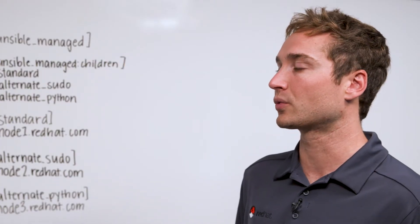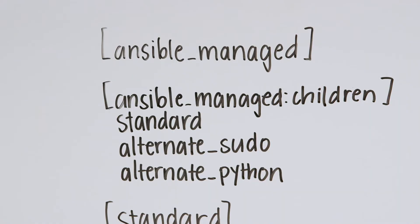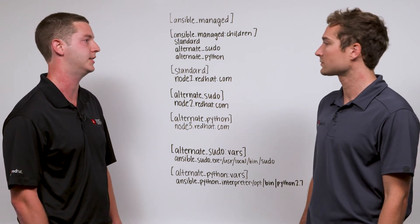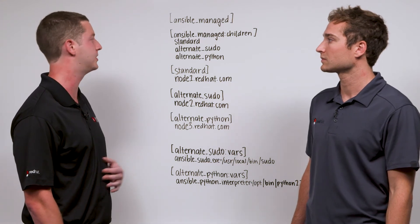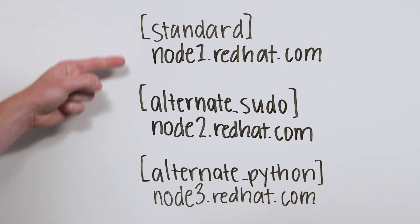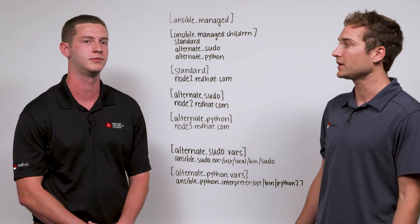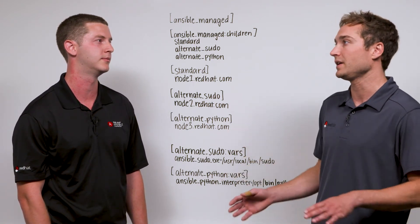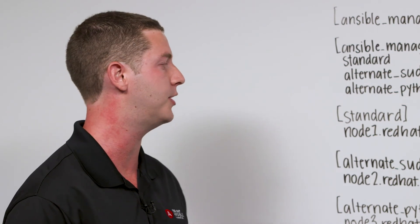Can you tell me how the groups in this inventory file work? Sure. Let's take a look at this inventory file behind us. We have our top-level inventory group, Ansible Managed, which is the group we would target with the playbook and it contains all of the other nodes. Ansible Managed has three children, or subgroup, or composite inventory groups beneath it. Each of these subgroups has a node in it. Notice at the bottom we also have variables that correspond to our subgroups. So if I run my playbook against Ansible Managed, it doesn't matter that the nodes inside the alternate sudo group have a varying location — it'll just work. Exactly. It's also important to note that you can target these subgroups independently.